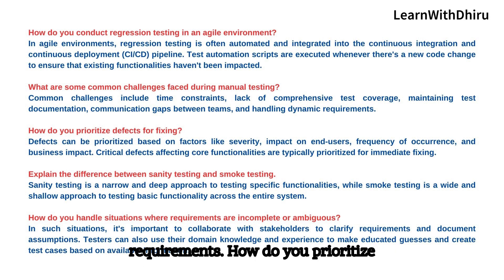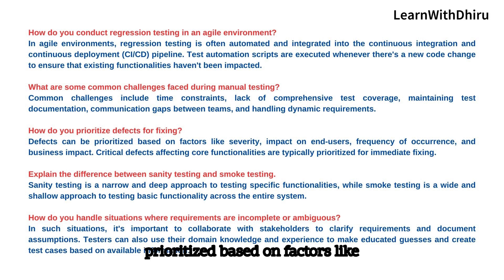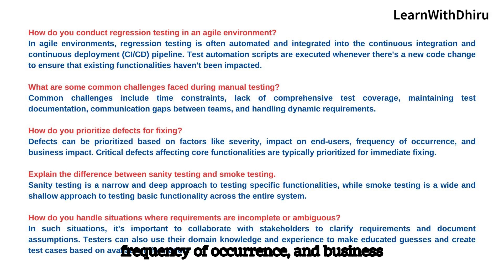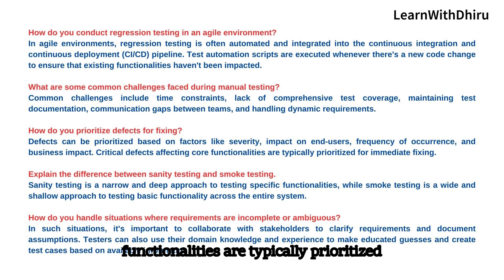How do you prioritize defects for fixing? Defects can be prioritized based on factors like severity, impact on end users, frequency of occurrence, and business impact. Critical defects affecting core functionalities are typically prioritized for immediate fixing.